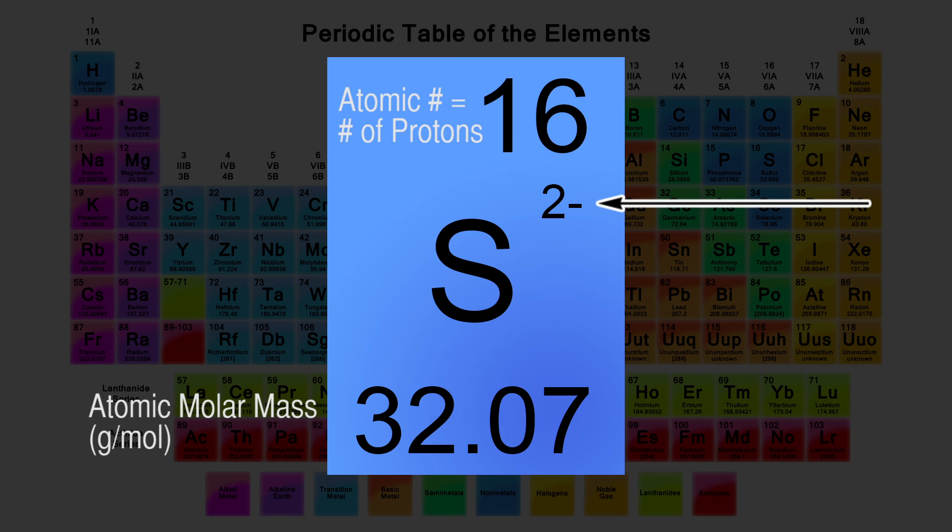The charge is usually found above the symbol, and is indicated with the number and either the plus or minus sign. Some ions exist with more than one charge option, so be careful if reading charges from the table. Sulfur has a charge of two negative.